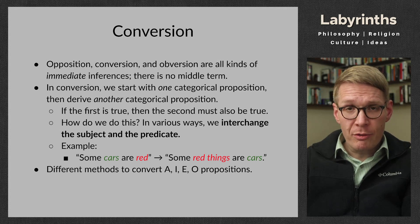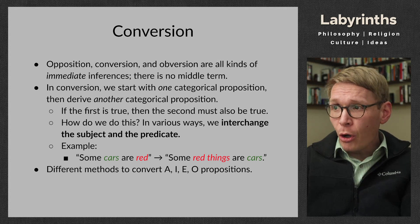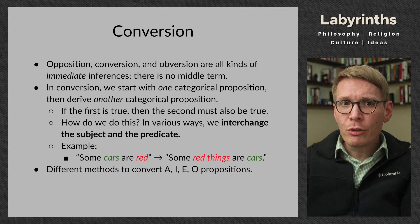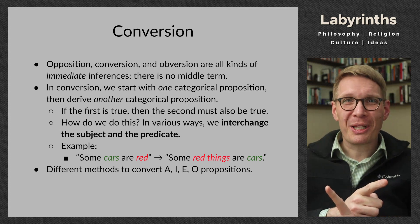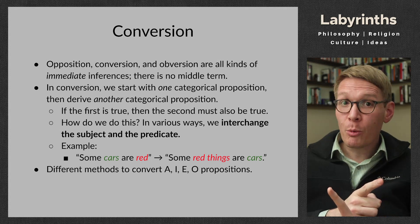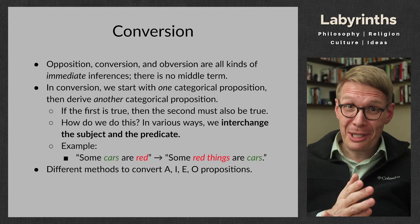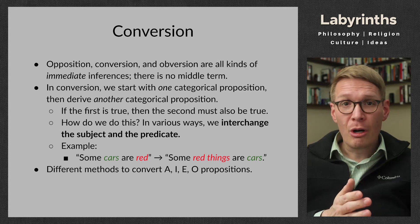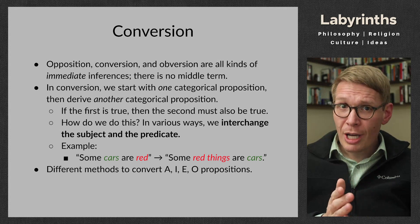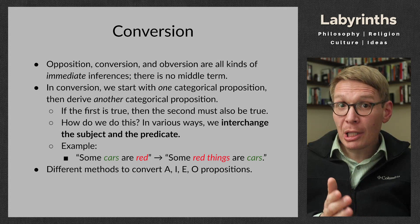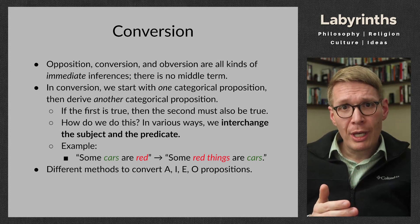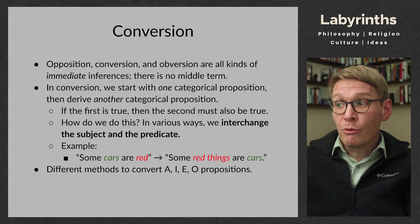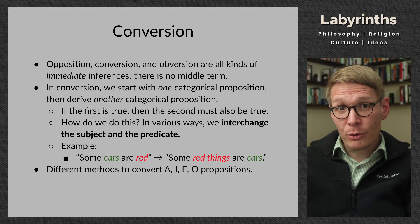If the first proposition is true, in the case of conversion, then the one we get from it — the second proposition — is also going to be true. Conversion is called conversion because what you're doing is interchanging the subject and the predicate. The example on the slide is: 'Some cars are red' implies that 'some red things are cars.' It's new knowledge — it's implied by the original proposition. We're going to see that all propositions can be converted to get new knowledge, and there are distinct ways to convert A, I, E, and O propositions, our four kinds of categorical propositions.